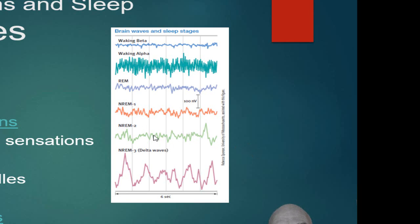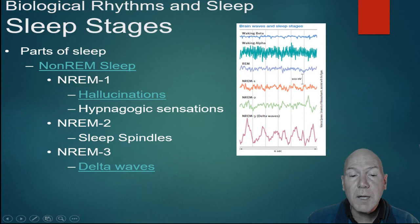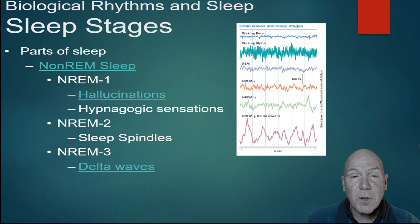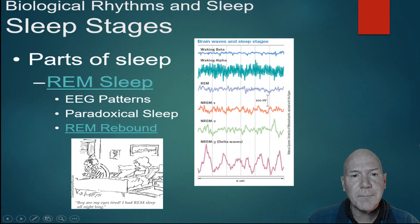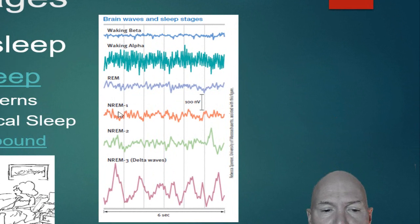After stage two non-REM, we go into stage three — deep sleep — marked by large amplitude delta waves. This is when sleepwalking and sleep talking are most common. In deep sleep it's difficult to wake you up — this is like when your alarm goes off and you don't hear it. So we have waking beta, alpha, and then non-REM sleep: theta waves, theta waves with sleep spindles, and delta waves.